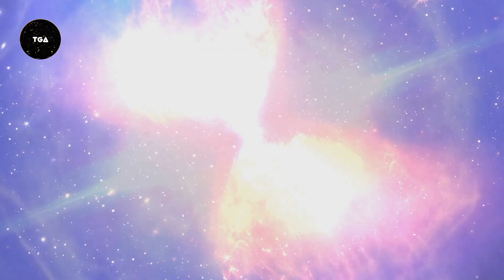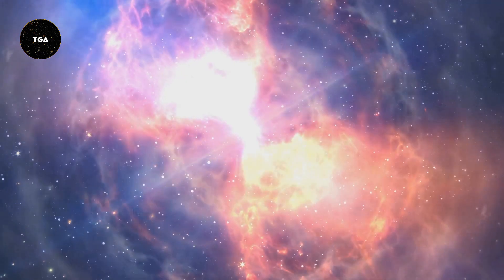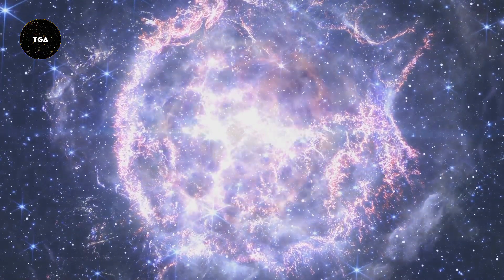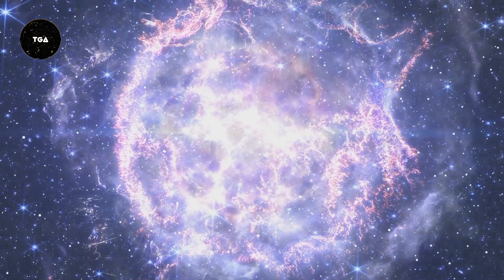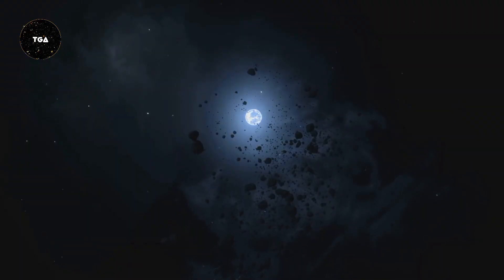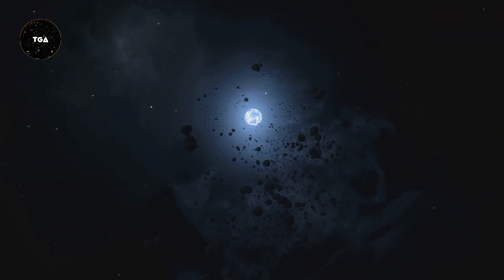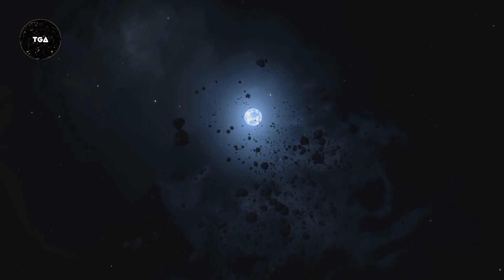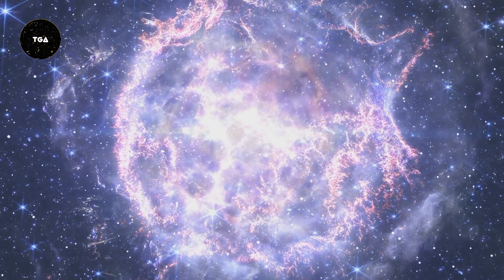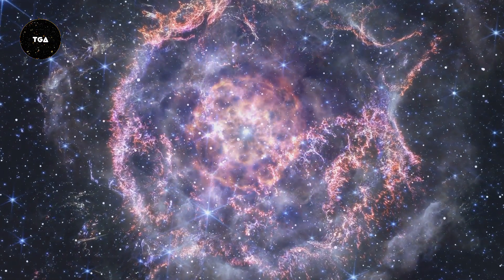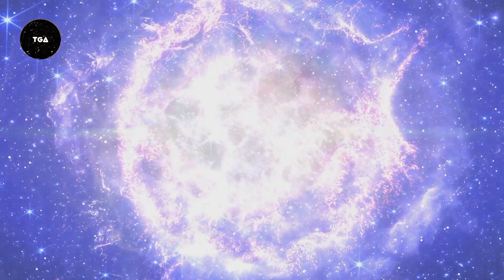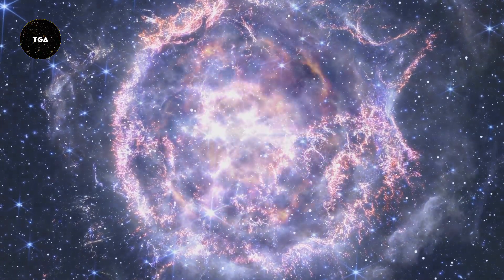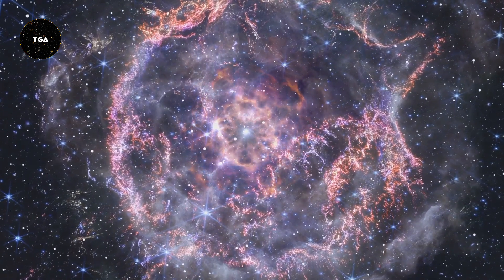Supernovae: The Explosive End of Stars. A supernova is a powerful explosion that marks the end of a star's life cycle. There are two main types of supernovae, Type 1 and Type 2. Type 1 supernovae occur in binary star systems where one star is a white dwarf. When the white dwarf accumulates enough material from its companion star, it undergoes a runaway nuclear reaction and explodes. Type 2 supernovae occur when massive stars exhaust their nuclear fuel and their cores collapse.